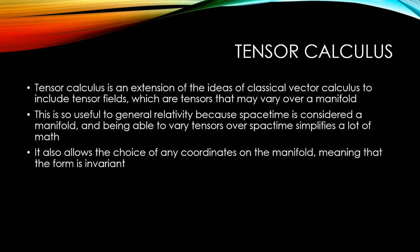Tensor calculus is an extension of the ideas of classical vector calculus to include tensor fields, which are tensors that may vary over a manifold. It's useful to general relativity because space is considered a manifold and being able to use tensors with it simplifies a lot of math. It also allows the choice of any coordinates on the manifold, meaning that the form is invariant.